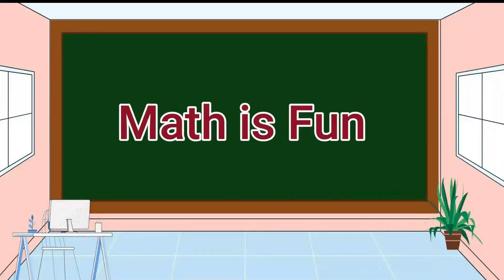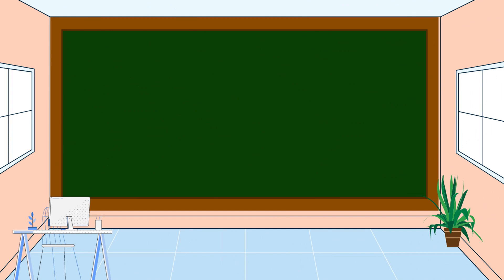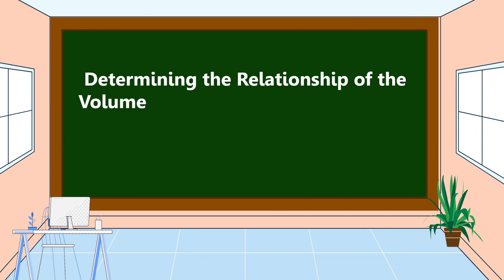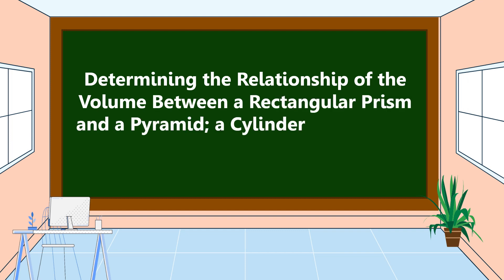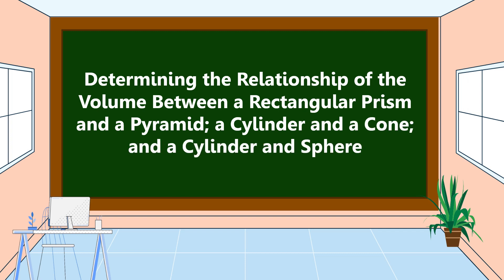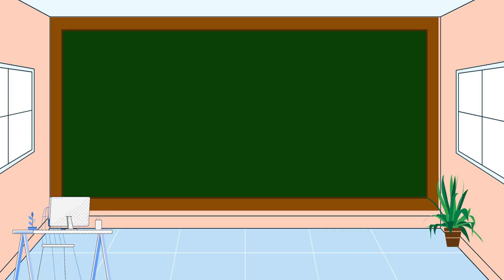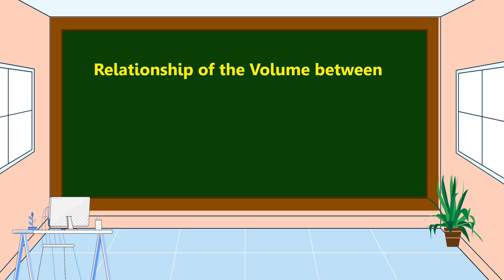Hello everyone, welcome to Math is Fun. Our lesson for today is all about determining the relationship of the volume between a rectangular prism and a pyramid, a cylinder and a cone, and a cylinder and a sphere.